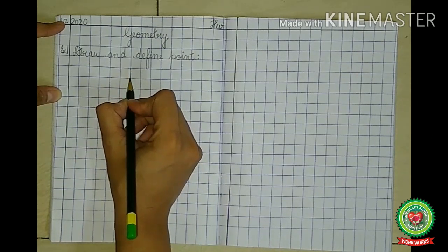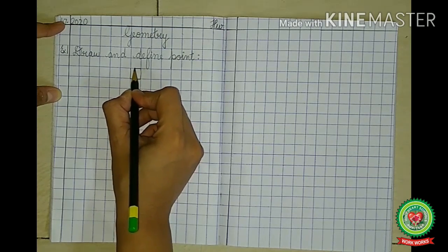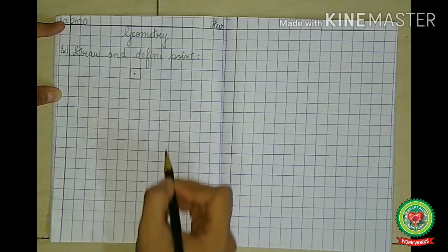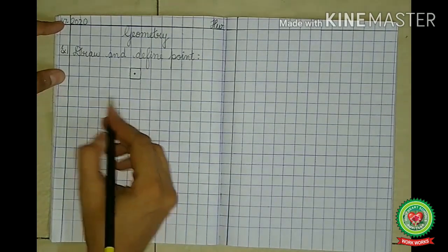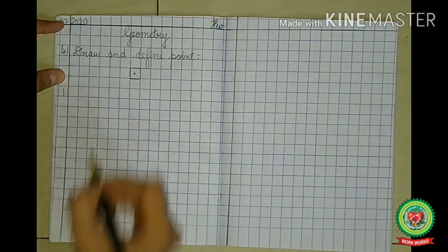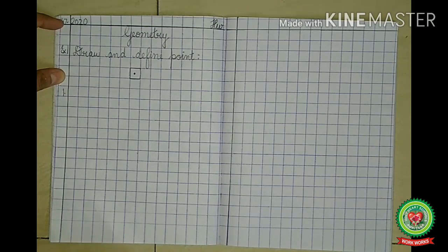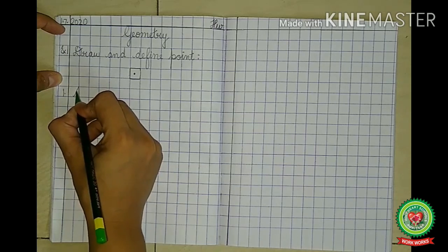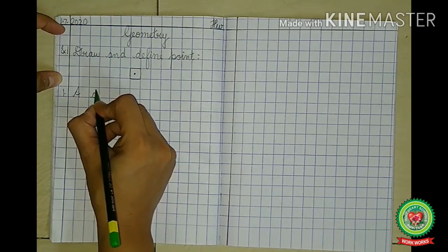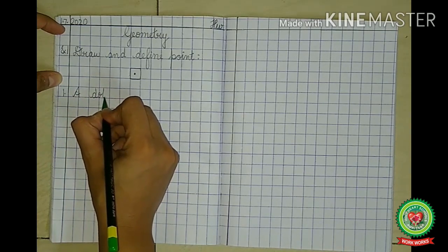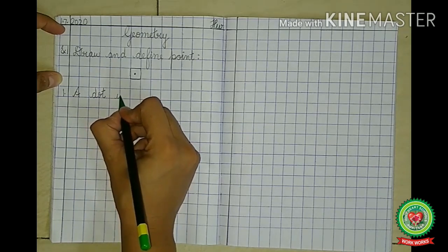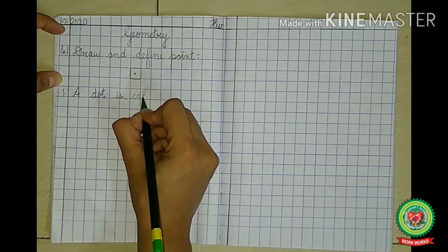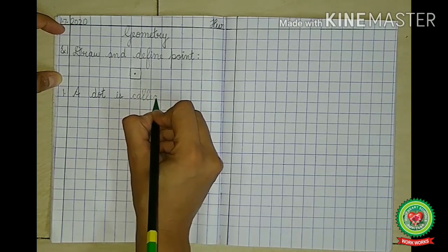Now leave a line. We will draw the point. You can highlight a square and in that square you can draw the point. Now again leave a line. Put number 1. As we have learnt, a dot is called a point.